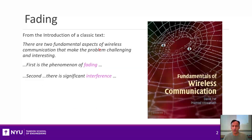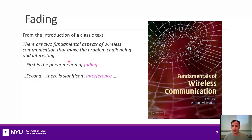If you took a wireless communications class about 10 years ago, one of the classic texts was Fundamentals of Wireless Communications by David Tse and Pramod Viswanath. At the introduction of their book, they say there are two fundamental aspects of wireless communications that make the problem challenging and interesting relative to wired communications. The first of these is fading, and the second is interference. In today's unit, we're going to talk about fading, and I'll address interference when we talk about multi-user systems later.